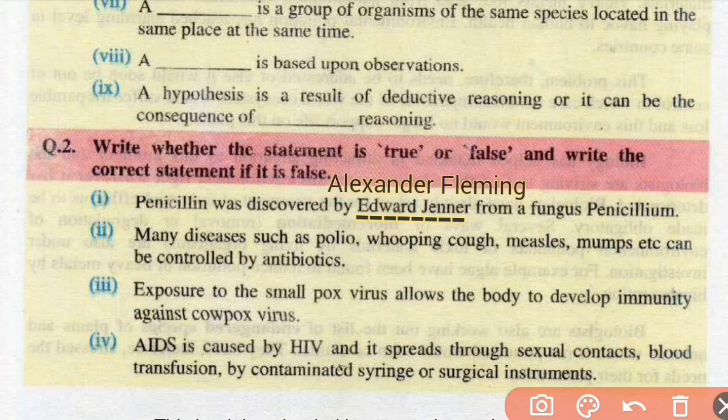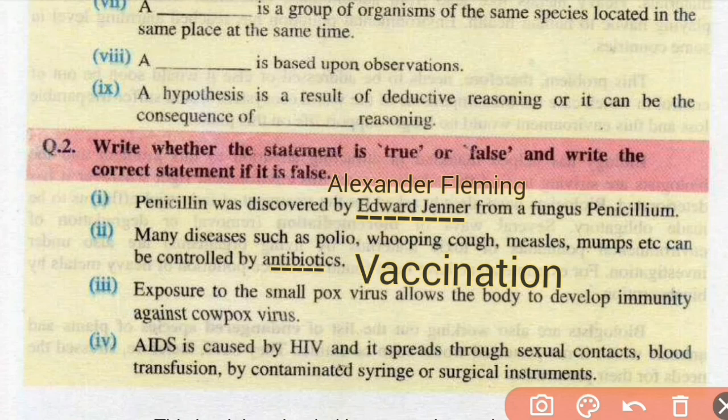No. 2: Many diseases such as polio, whooping cough, measles, mumps, etc. can be controlled by antibiotics. No. 3: Exposure to the smallpox virus allows the body to develop immunity against cowpox virus — cowpox ki jaga pe smallpox anna chahiye. No. 4: AIDS is caused by HIV and it spreads through sexual contact, blood transfusion, by contaminated syringe or surgical instruments. This is true.